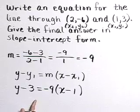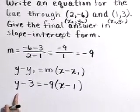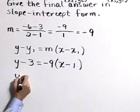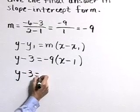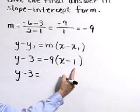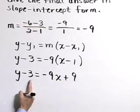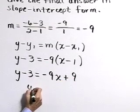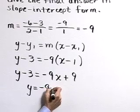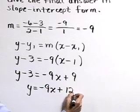Now we want to write this equation in slope-intercept form, so let's solve for y. y minus 3 equals, multiplying through on the right side, we get -9x plus 9, and adding 3 to both sides gives y equals -9x plus 12.